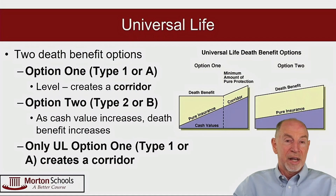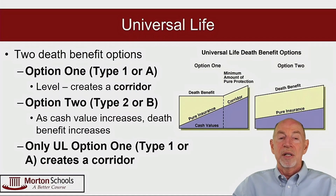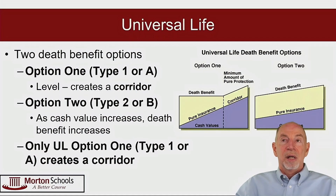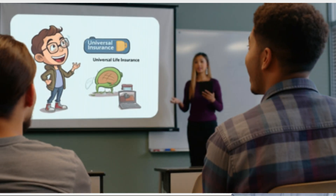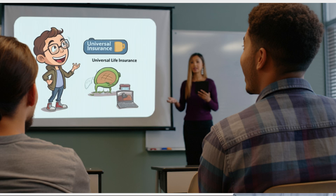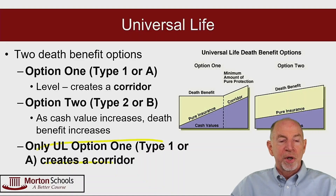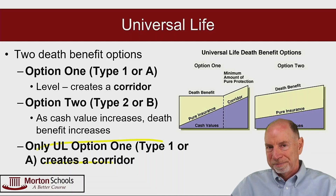In other words, if the exam asks which policy has a corridor or which policy automatically creates a corridor, the answer is Universal Life Option 1. Option 1 is going to automatically create a corridor.